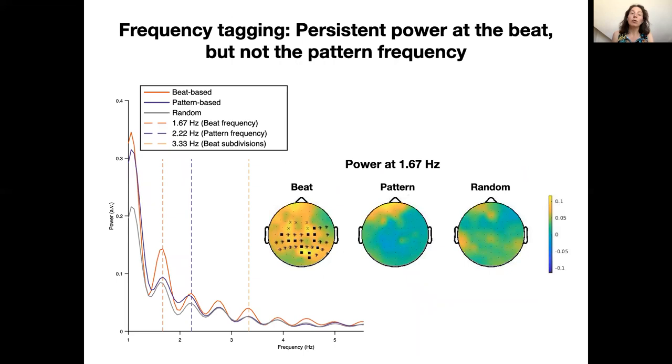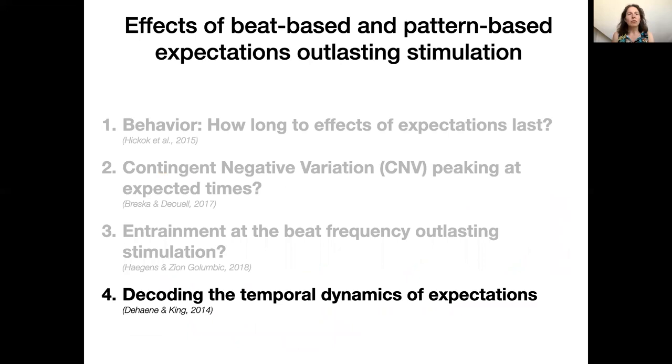This graph shows results from a Fourier transform on the EEG data from the silence window, and the scalp distributions for power at 1.67 hertz, which is the beat frequency. The highlighted electrodes indicate where power in the beat-based condition was larger than in the other conditions at this frequency, and you can also see this in the average data. This is consistent with persistent entrainment at this frequency. What is interesting is that we do not see these effects for expectations based on the pattern. At 2.22 hertz, there are no differences between conditions.